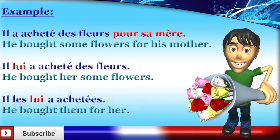For example, il a acheté des fleurs pour sa mère — he bought some flowers for his mother. Des fleurs is the direct object because that's what he bought, and pour sa mère is the indirect object because that's who he bought the flowers for. So if his mother had already been mentioned, we could replace the indirect object noun sa mère with an indirect object pronoun, lui. We would get: Il lui a acheté des fleurs — he bought her some flowers. Notice that lui has been placed before the helping verb a.